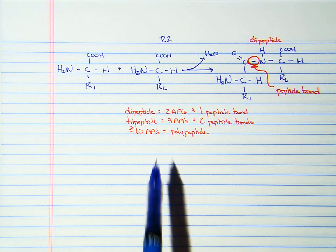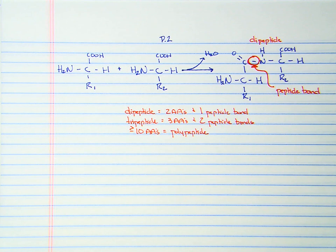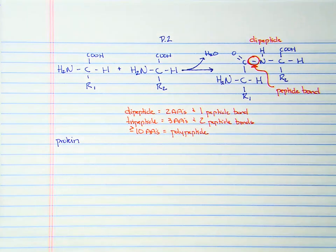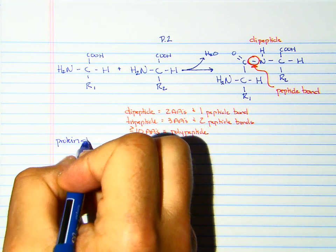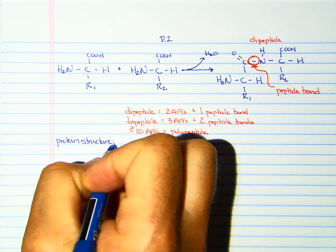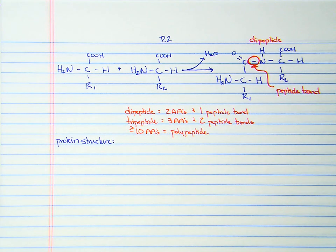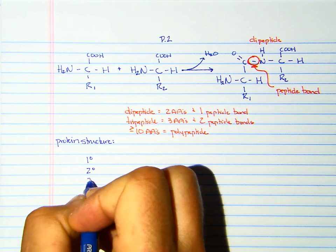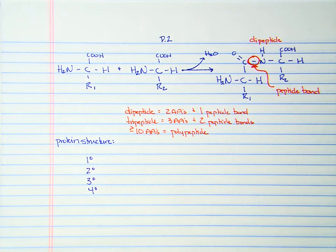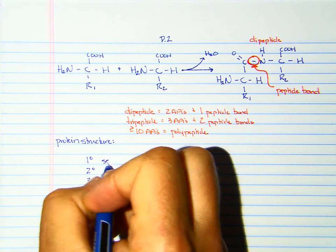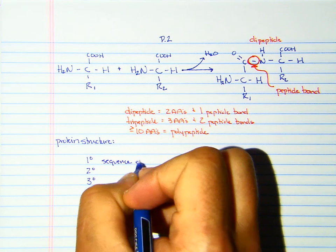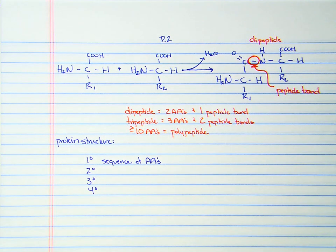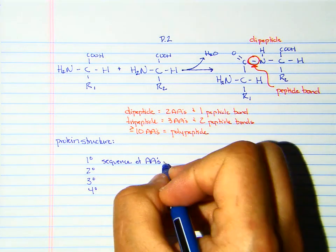We take amino acids, link them together, and what we end up with is a protein. A protein has structure. If you're fortunate enough to take biochemistry, you get to learn a lot about protein structure. Protein structure has primary, secondary, tertiary, and quaternary structure. The primary structure is the sequence of amino acids. What order are the amino acids joined in? That is the sequence of the amino acids.